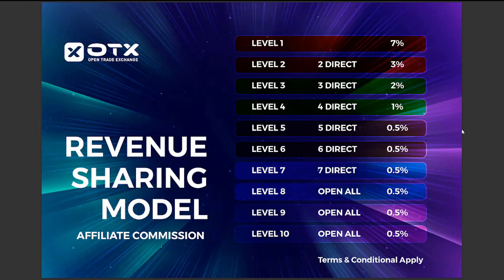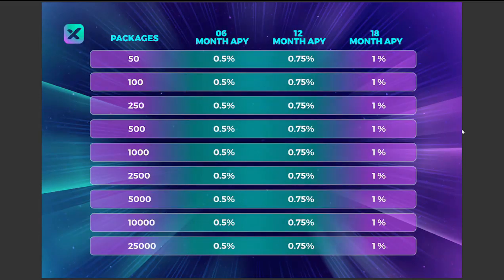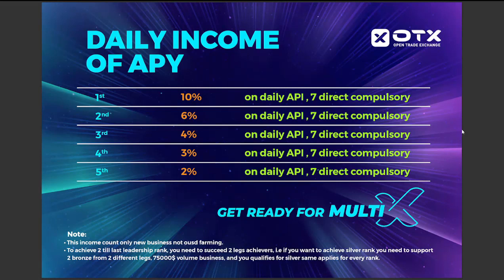On the right side, we have information about the levels. For example, level 2: 2 direct referrals and 3% commission. There are rank rewards as well. We have really nice information about the packages and daily income via API. The first package: 10% daily API, with 7 direct referrals compulsory. You can also find information about the second, third, fourth, and fifth packages.